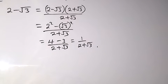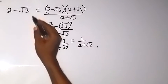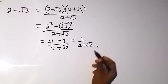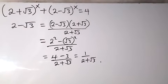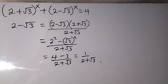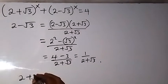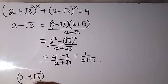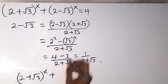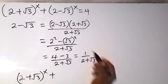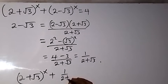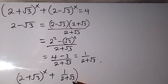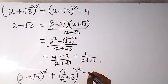That means our 2 minus root 3 can be replaced with 1 over 2 plus root 3. Then this equation can be written again as 2 plus root 3 all raised to power x, plus 1 over 2 plus root 3 all raised to power x, then equals to 4.